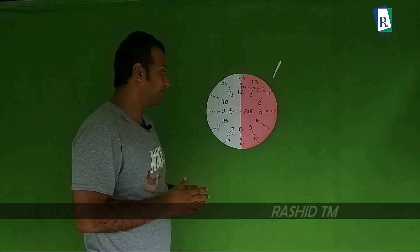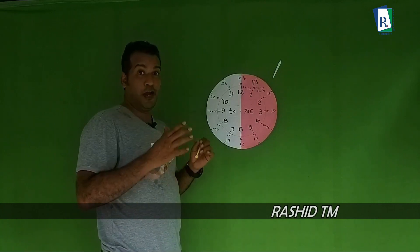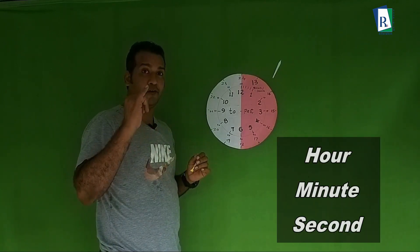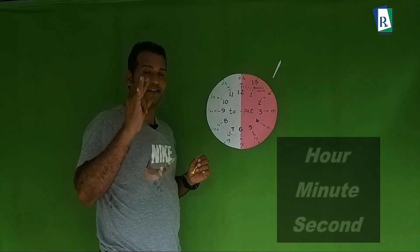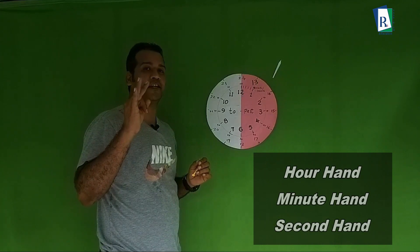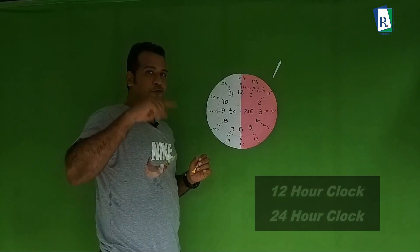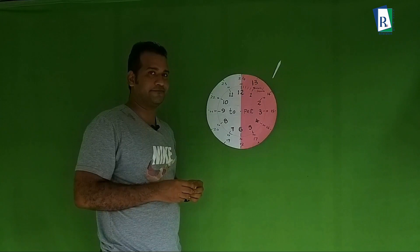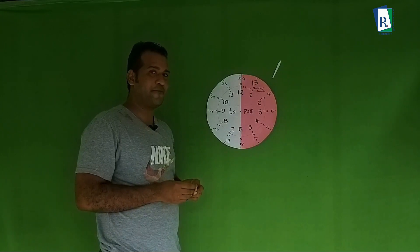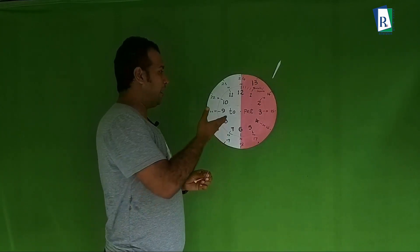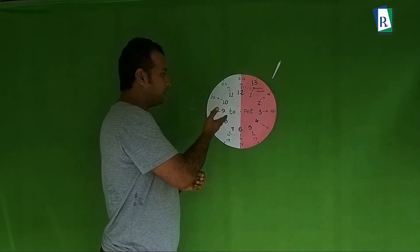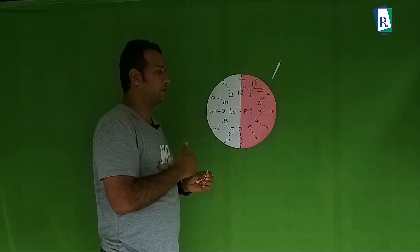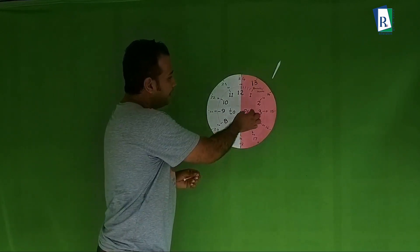Children, welcome back. You have already studied hour, minute, second, hour hand, minute hand, second hand, 12-hour clock, and 24-hour clock. Today I am going to discuss how we can read time on a clock.